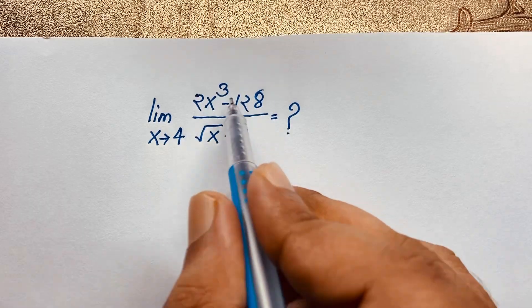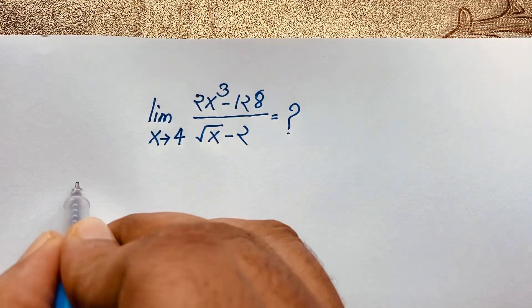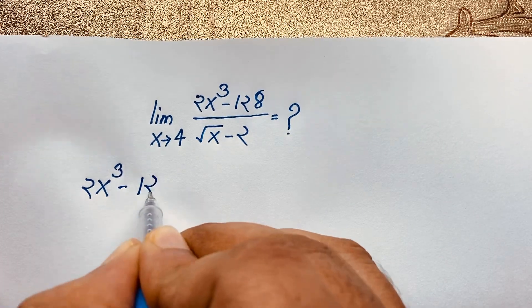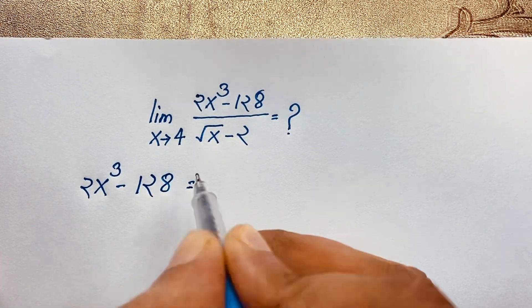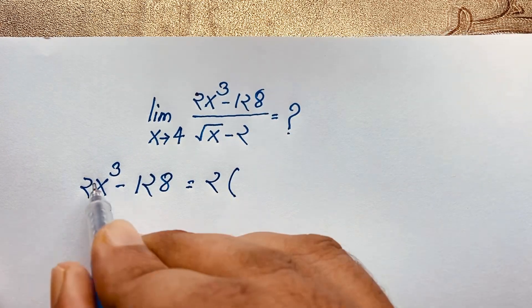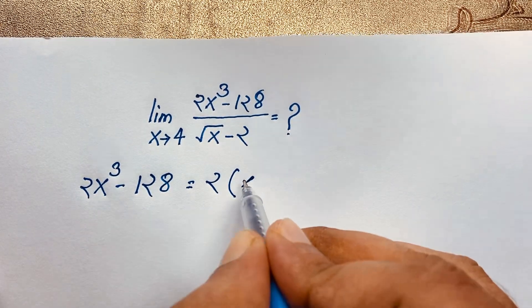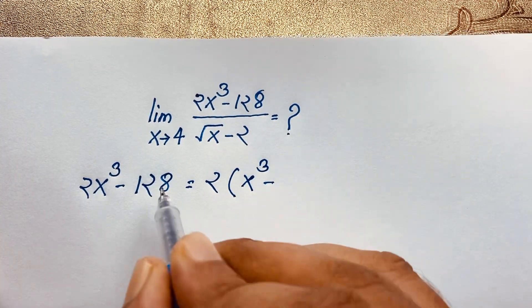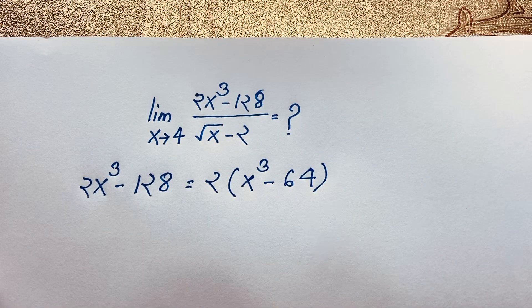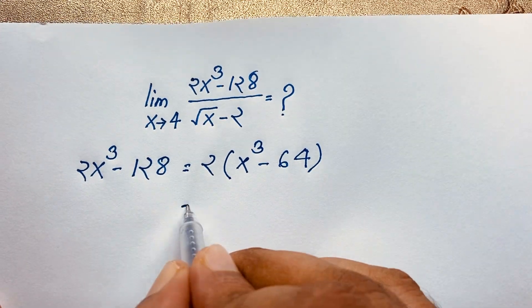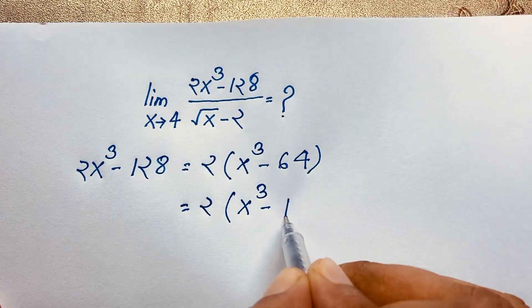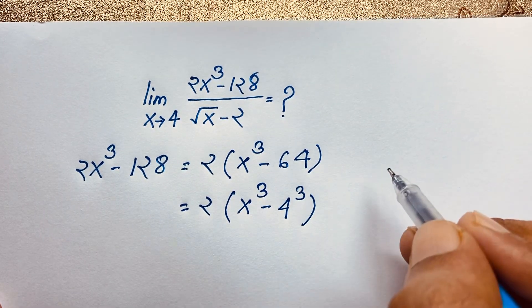First, I evaluate the numerator expression 2x³ - 128. I take 2 as common factor, so it becomes 2 times (x³ - 64). You can see that 64 is 4 to the power 3.